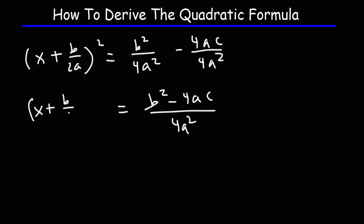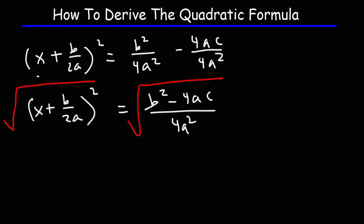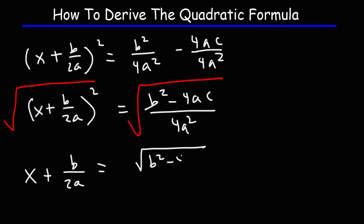Now our goal is to isolate x, so what we need to do is take the square root of both sides. The square root and the square cancel, so we simply have x plus b over 2a on the left. On the right we get the square root of b squared minus 4ac over the square root of 4a squared. The square root of 4 is 2, and the square root of a squared is a.